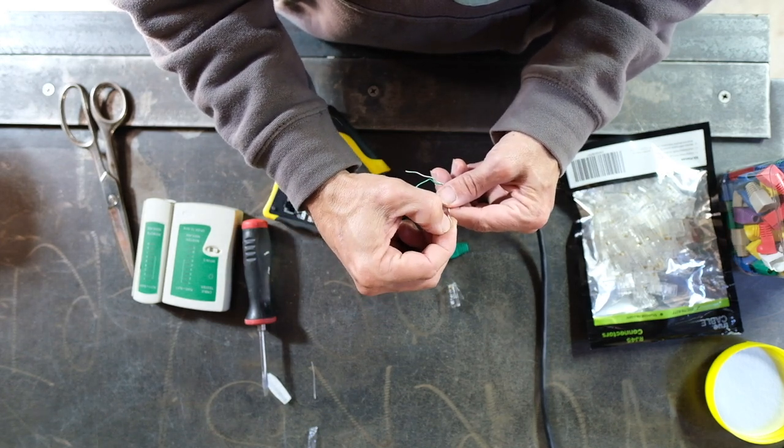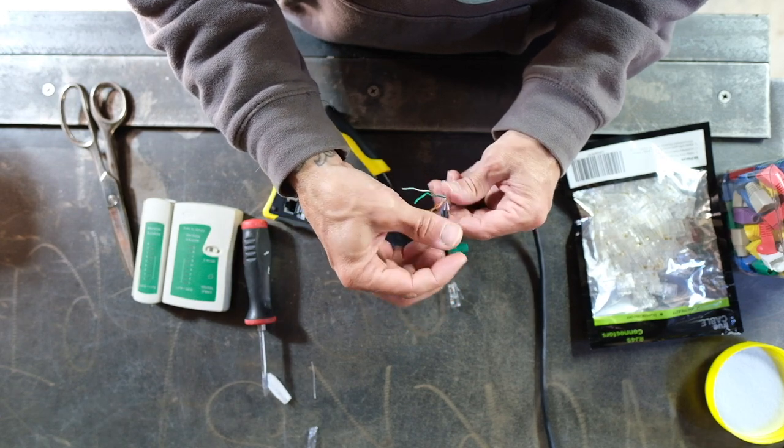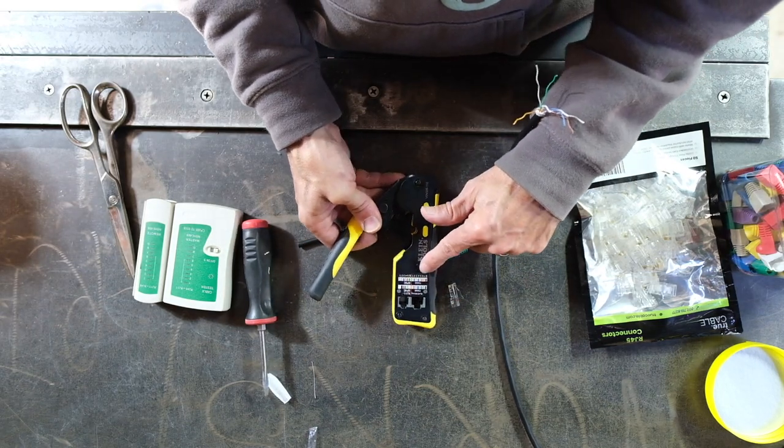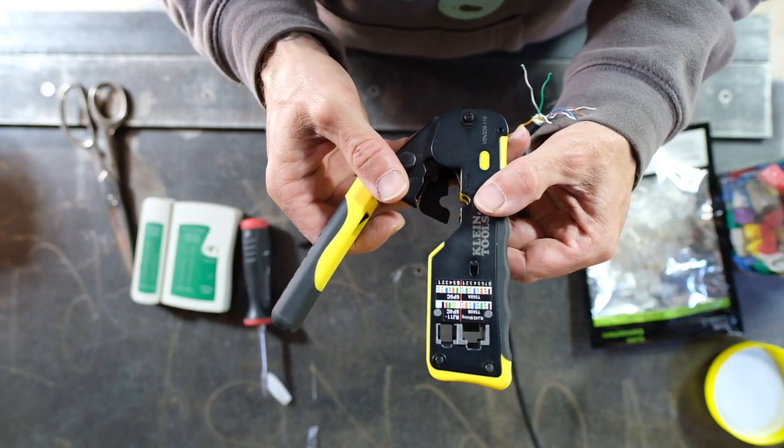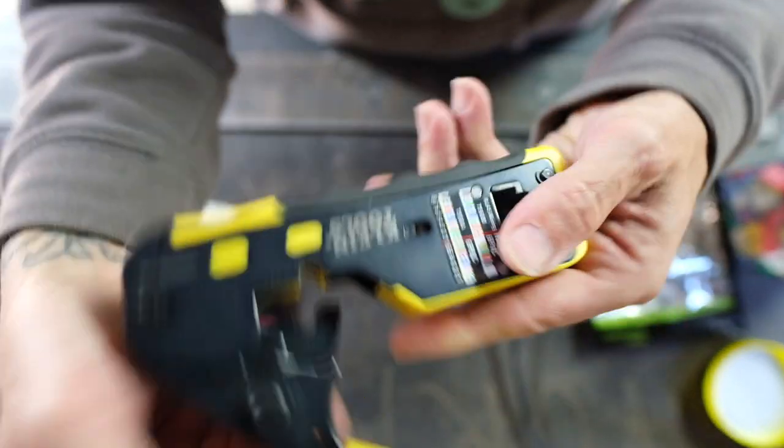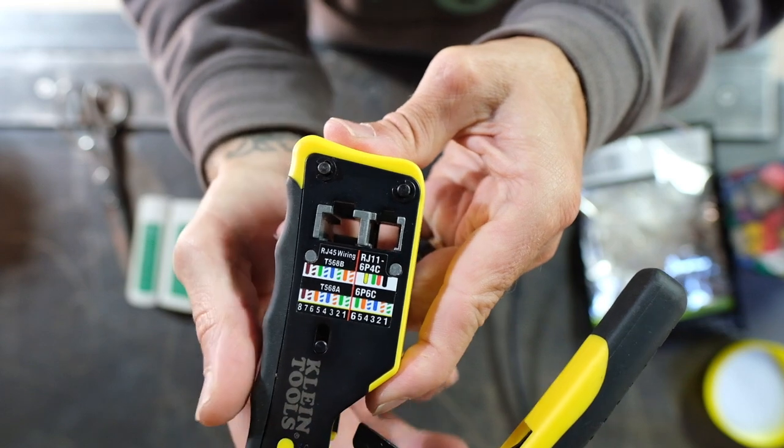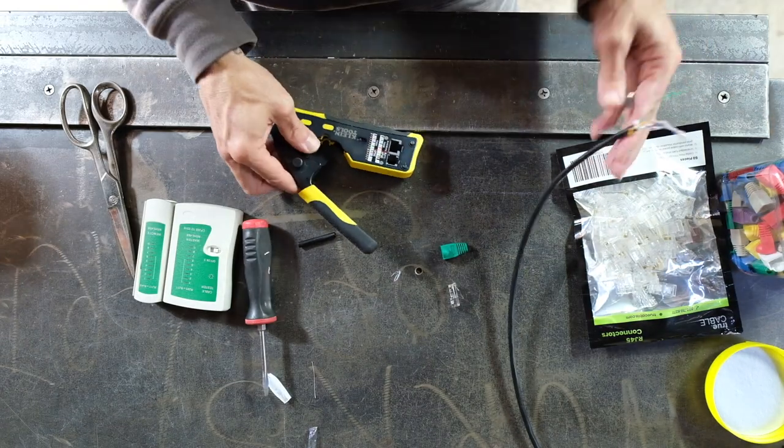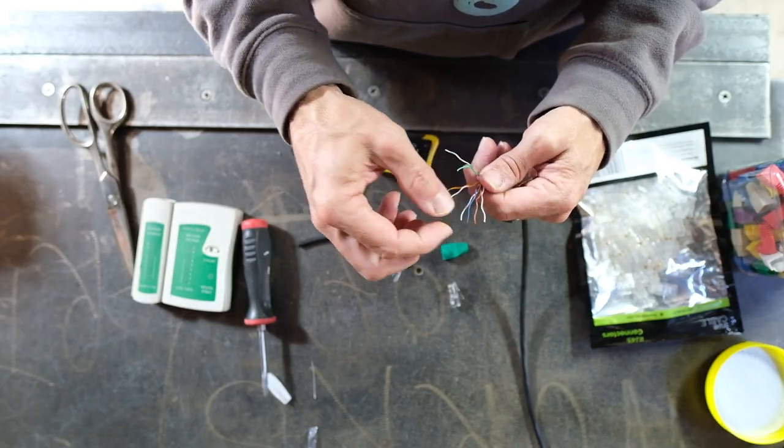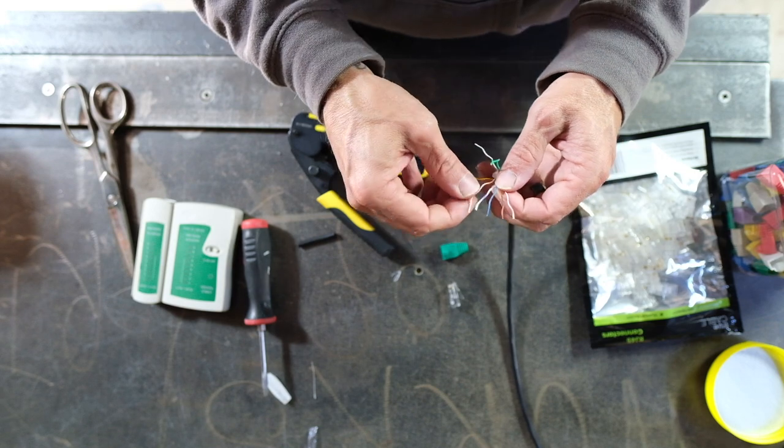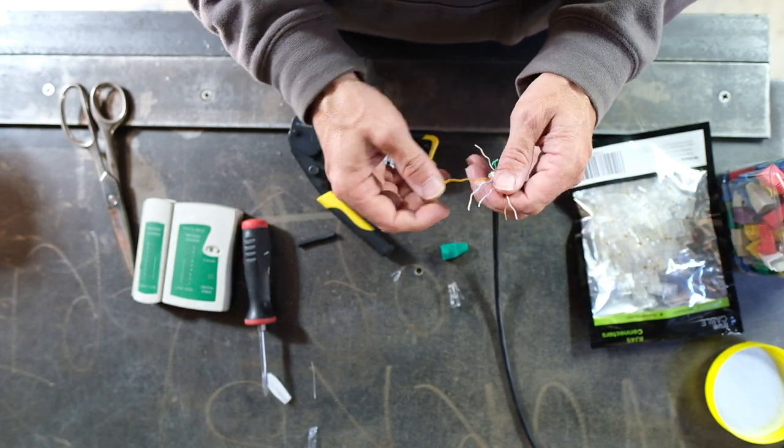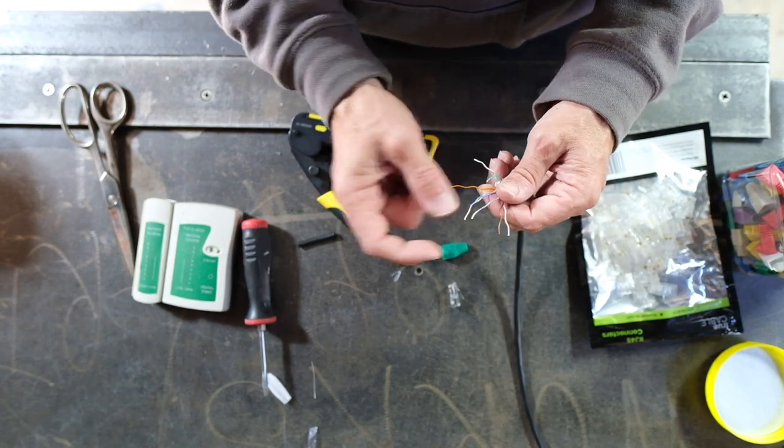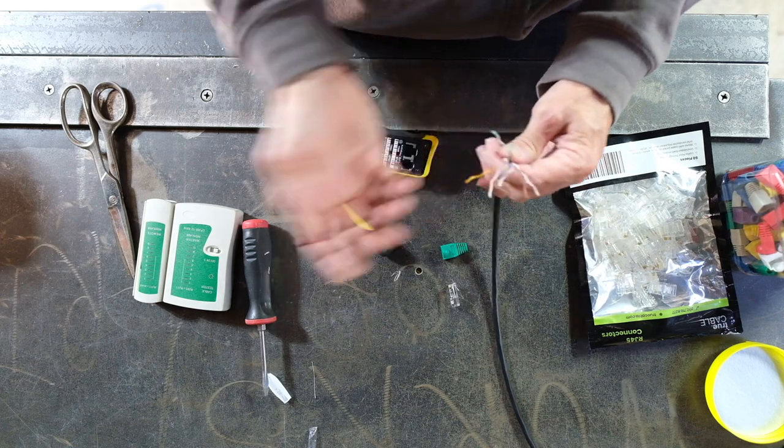That order is going to be orange white, orange, green white, blue, blue white, green, brown white, brown. You can look that up. In fact, it's on the side of this thing right here. We're going to go with this T568B. It doesn't really matter what order you do it in as long as the order is the same on both ends of the cable because it's basically saying, at the far end of the cable, whatever plugs into that orange white orange there should plug into it here. Just follow the order, pretty straightforward.